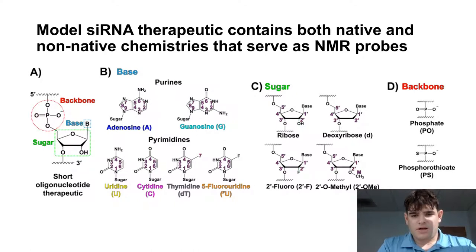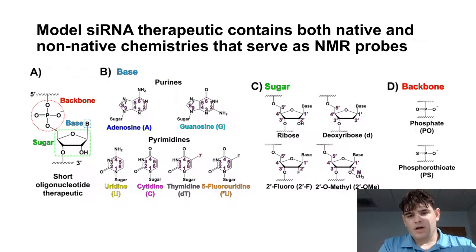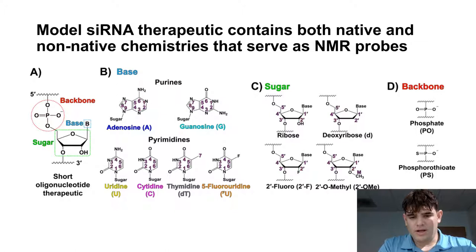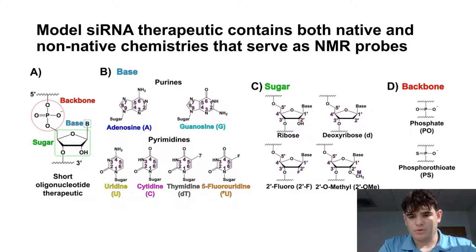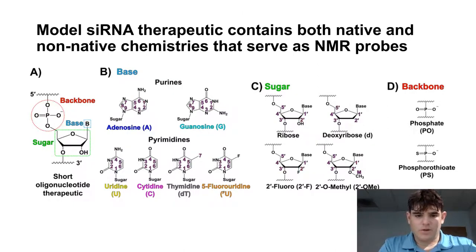Within the model siRNA, you have both what we call native and non-native chemistries. The native chemistries include your bases like adenosine, guanosine, uridine, and cytidine, which are found in all RNAs and some DNAs. But we also have non-native chemistries, and these include bases like 5-fluorouridine as well as modified sugars like 2'-fluoro and 2'-O-methyl. And you also have non-native chemistries at the backbone region, such as phosphorothioates.